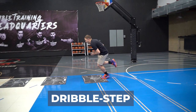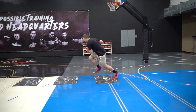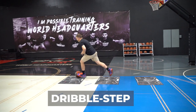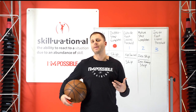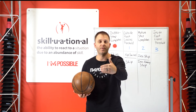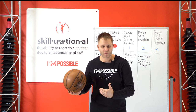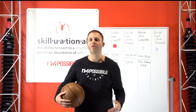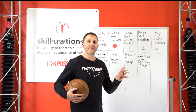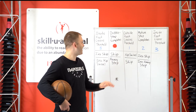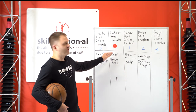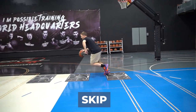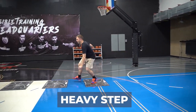The dribble step is the timing of the dribble with the inside foot — that's the natural, most common timing in basketball. As a player is dribbling up the floor, the ball will hit right as or right before the inside foot hits the floor. At that moment in time you have a whole other set of options: you can skip, which is most common, or you can heavy step and start to change pace.